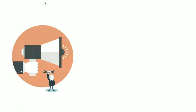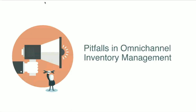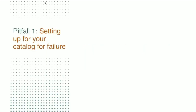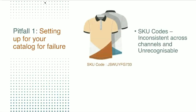The first pitfall in omni-channel inventory management is that SKU codes are not consistent across channels and not easily recognizable. You typically start on one channel, then realize you want better SKU codes and end up changing them across Amazon, your website, or your store. They're not human-readable, meaning employees can't read and recognize the product. Try to keep SKU codes easy to understand and consistent across channels from the very beginning.